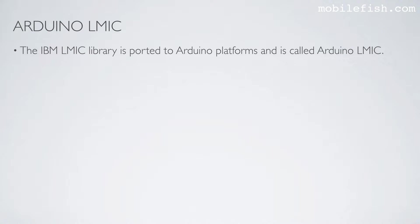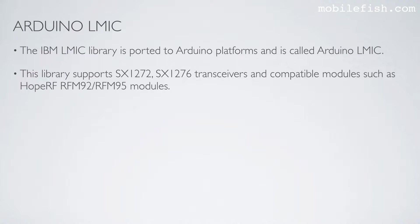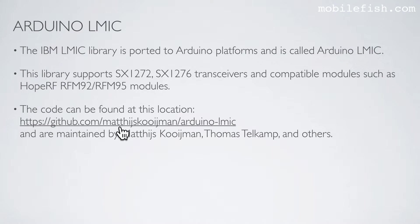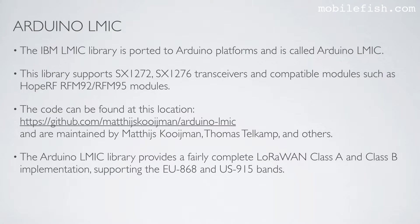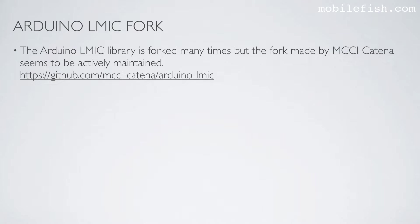The IBM LMIC library is ported to Arduino platforms and is called Arduino LMIC. This library supports SX1272 and SX1276 transceivers and compatible modules such as HopeRF RFM92 or RFM95 modules. The code can be found at this location and is maintained by Matthijs Koeman, Thomas Telkamp, and others. The Arduino LMIC library provides a fairly complete LoRaWAN Class A and Class B implementation supporting the AU868 and US915 bands. The compiled size of this library is about 30 KB. The Arduino LMIC library is forked many times, but the fork made by MCCI Catena seems to be actively maintained — see this location.